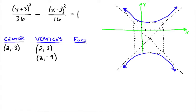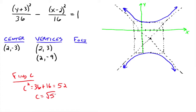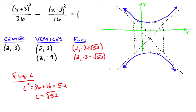Now let's find the foci. Find c: c squared equals 36 plus 16, which equals 52. So c equals the square root of 52. The foci are found by adding c to the y part of the center, giving us (2, -3 + √52) and (2, -3 - √52). That's where the two foci are located.